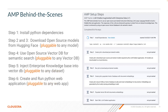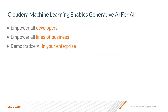But all this is customizable and pluggable to your specific use case — use any model, any data, any database, and any application framework of your choosing. With this AMP and CML, any developer now has the tools they need to build and host open source LLM applications for the enterprise.